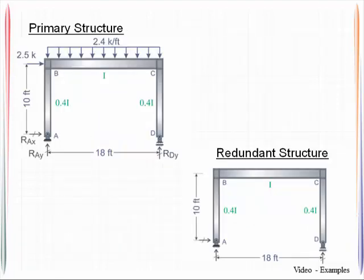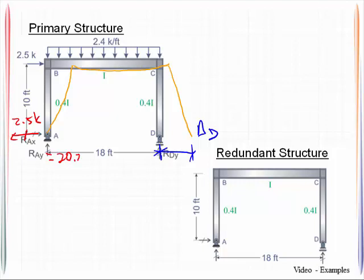So, for my primary structure, I will remove the reaction at DX. I'm just going to sketch a rough deflected shape here, just so that I can label this accordingly. This will be delta D, and this is my primary structure. My horizontal reaction here comes out to be 2.5 kips. My vertical reaction is 20.21 kips, and this is just using statics. My vertical reaction here, 22.99 kips.